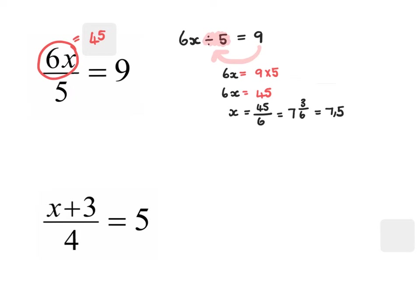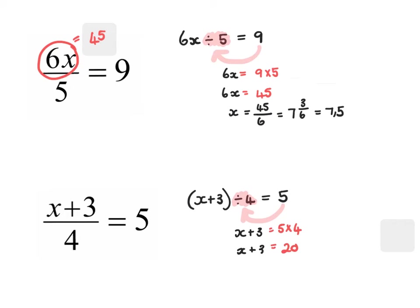Let's have a look at the second example. Here we have x plus 3, and this whole expression divided by 4 must give me 5. Working backwards, instead of dividing by 4 I would multiply by 4. So 5 multiplied by 4 is 20, which means that x plus 3 must equal 20. So what number, if I add 3 to it, gives me 20? That's 17.